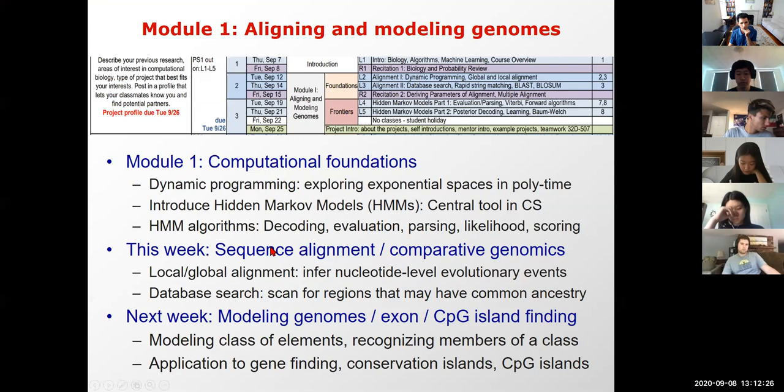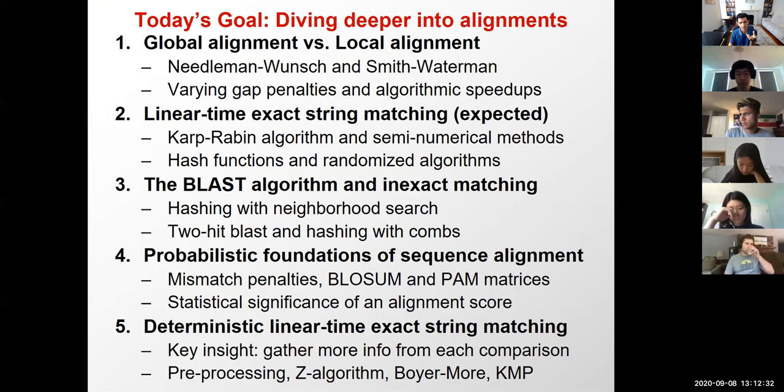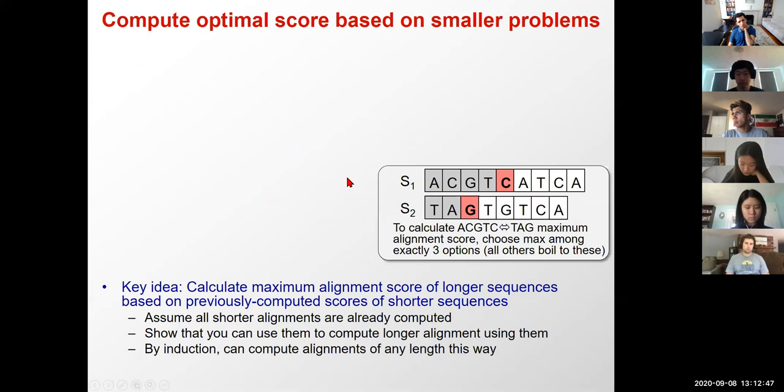The goals for today are sequence alignment and database search. We're going to learn about hashing, which is fundamentally important, and also probabilistic interpretations of our scores, which is hugely important in machine learning in general.